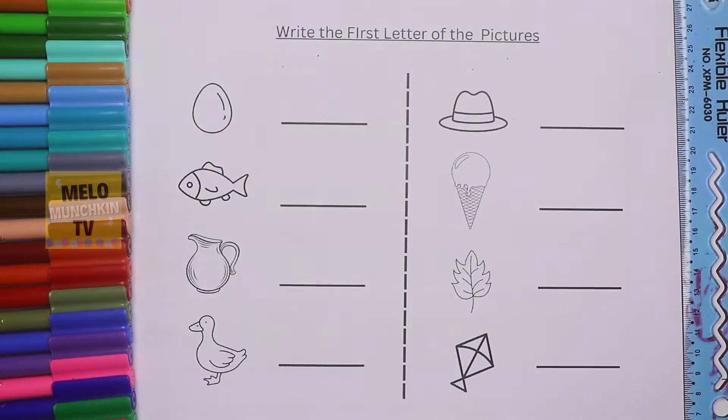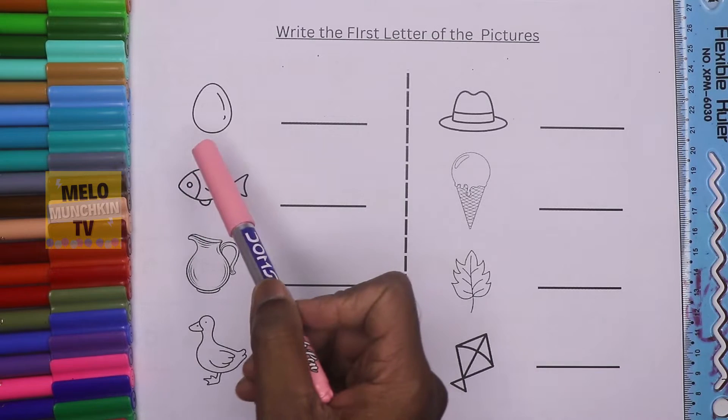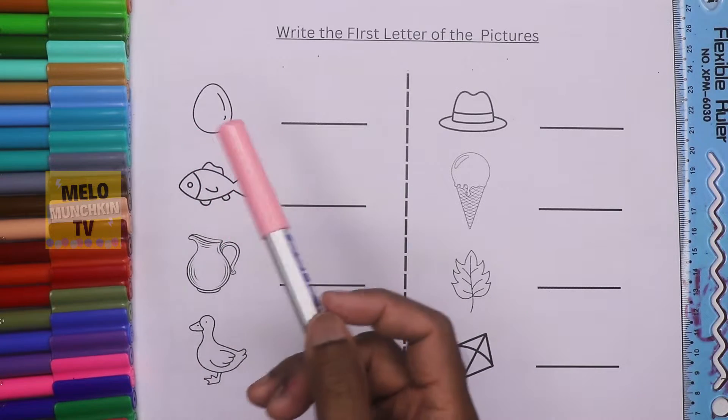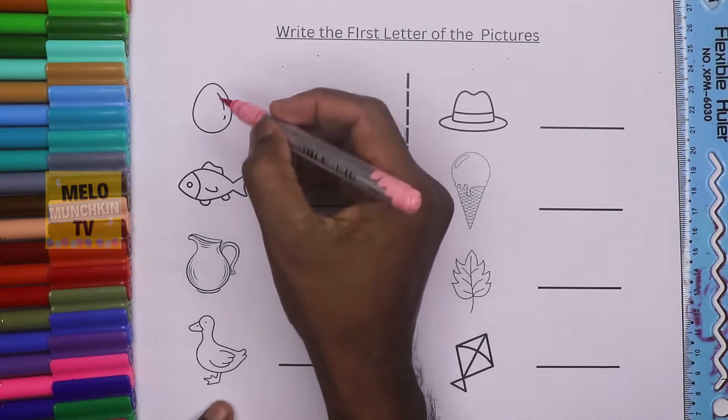Hello kids, welcome to my channel. Today we'll write the first letter of these pictures, so let's get started. First one is egg, so the first letter will be E. Let me color a little bit, and the first letter is E.